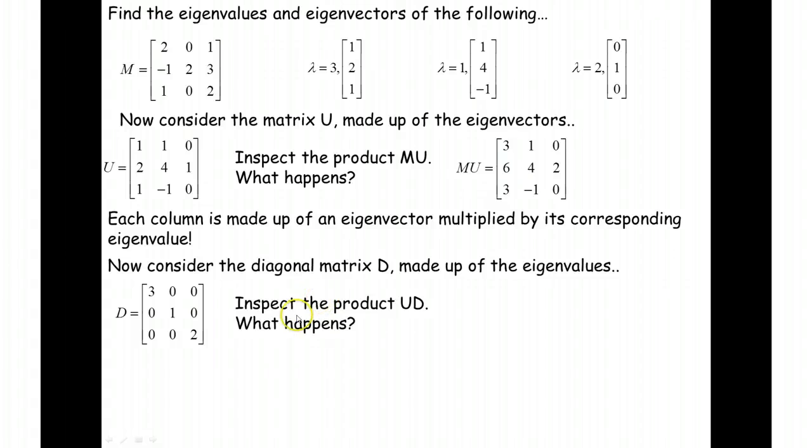So if you have managed to do that, what you should have found is that UD is equal to that there. And what that tells us is that MU is actually equal to UD. So I could write that down. MU is equal to UD.